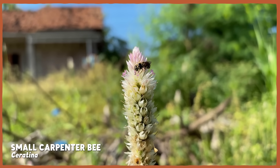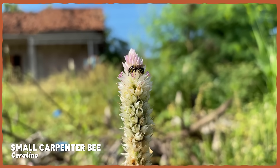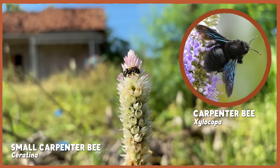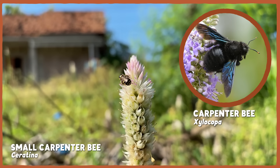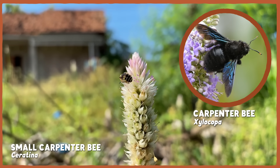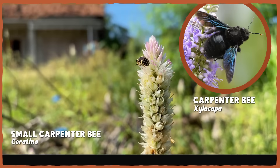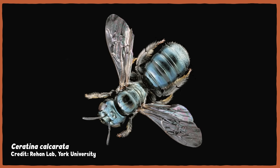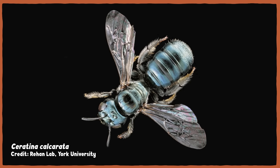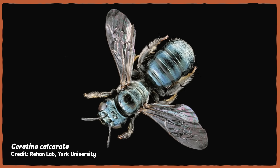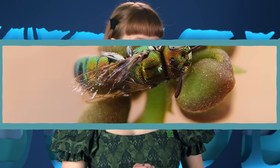Small carpenter bees, not to be confused with their much larger distant cousins, are any of the hundreds of species in the genus Ceratina that are found worldwide. The main species we'll be focusing on today is Ceratina calcarata, which lives all over eastern North America. They're in the same family as honeybees, but they don't live in colonies with a queen and workers.